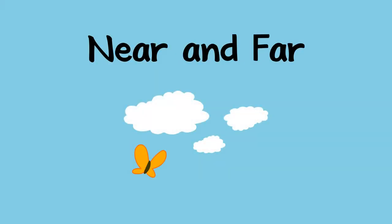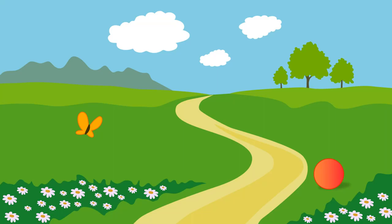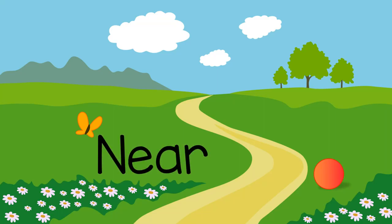Here is a game to help a child learn about near and far. You can ask, can you find something that is near? And the child can find something near to them, like a flower, a ball, or a butterfly.